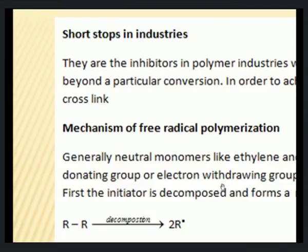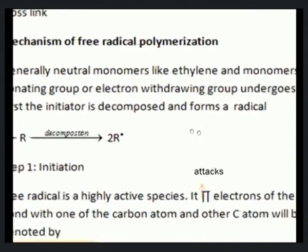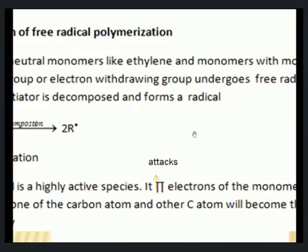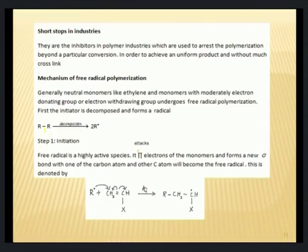Coming to the mechanism of free radical polymerization, the first step is the production of free radicals. Neutral monomers like ethylene, or monomers with electron-donating or withdrawing groups, generally undergo free radical polymerization. Before initiation, the free radical is formed from the initiator — BPO or AIBN as seen previously. They decompose to form free radicals; for every one initiator molecule, two free radicals are formed.